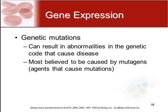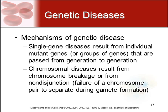Genetic mutations can result in an abnormality in the genetic code, which is then expressed as a disease. Most are believed to be caused by mutagens, which are agents that cause mutations. The mechanism of a genetic disease can be a single-gene disease resulting from an individual gene or a group of genes, and these can be passed from generation to generation. There can also be a chromosomal disease, which results from chromosome breakage or disjunction — failure to separate during formation. A chromosomal disease is not passed on; it is a problem with reproduction of that chromosome.